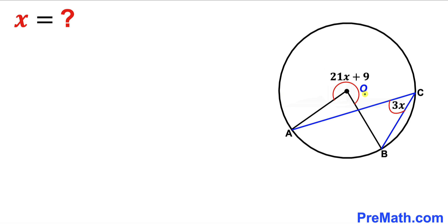Welcome to pre-math. In this video we have got this circle such that this reflex angle AOB is 21x plus 9 and this another angle ACB is 3x, and now we are going to find the value of x.